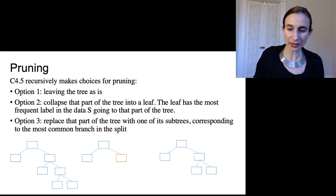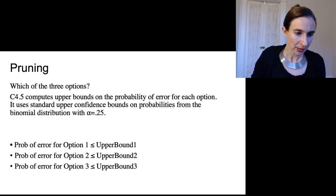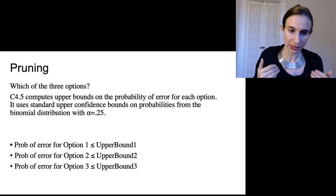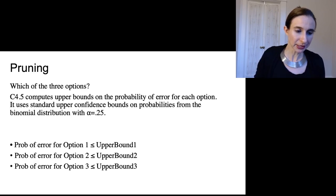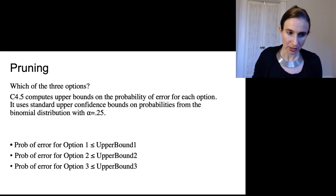And it actually has to reason about which of the three options it's going to pick. Now the way C4.5 does it, is it computes upper bounds on the probability of error for each option. And in particular, it uses standard upper confidence bounds on these probabilities that come from the binomial distribution. And why the binomial distribution?